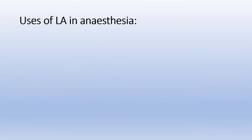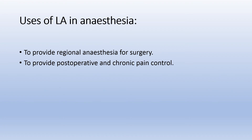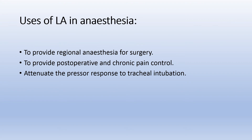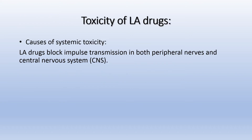Uses of local anesthesia in practice include: providing regional anesthesia for surgery, providing post-operative and chronic pain control, attenuating the pressor response to tracheal intubation, decreasing coughing during intubation and extubation, and as an anti-arrhythmic drug.